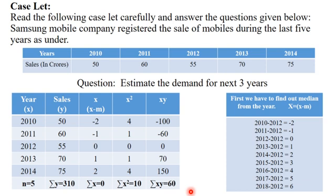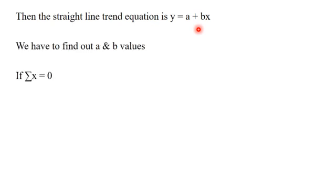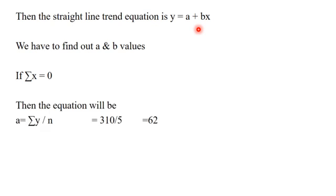The straight line trend equation is y is equal to a plus bx. So we have to find out a and b values. If summation x is equal to 0, then the equation will be: a is equal to summation y divided by n, which equals 310 divided by 5, which is equal to 62.